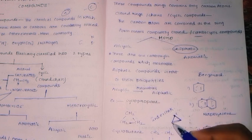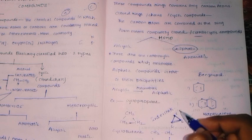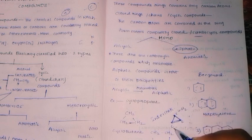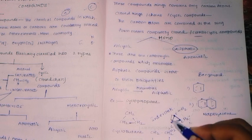Each carbon has two hydrogens — CH2, CH2, CH2 — and this is the basic structure of cyclopropane.